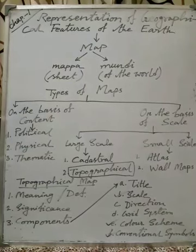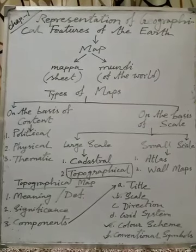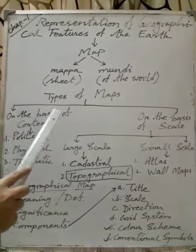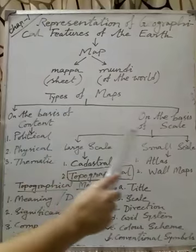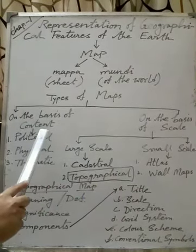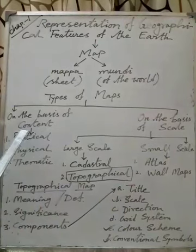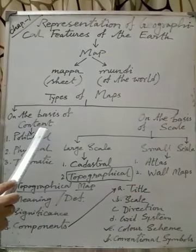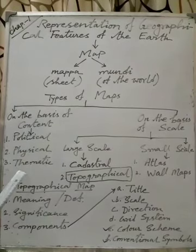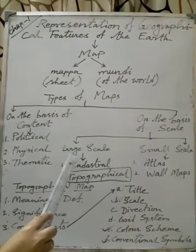Many of you have seen maps, and many of you have an atlas — a book of maps. We can divide maps into two categories: one on the basis of content, and another on the basis of scale. On the basis of content, maps can be three types: political, physical, and thematic maps. On the basis of scale, they can be two types: large scale and small scale.